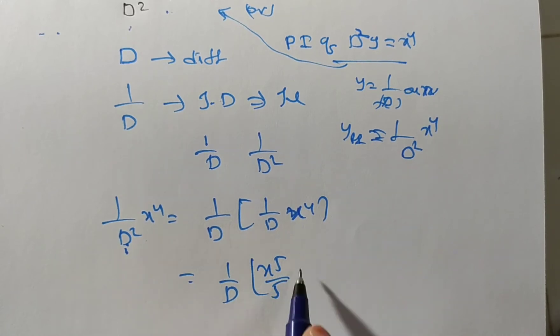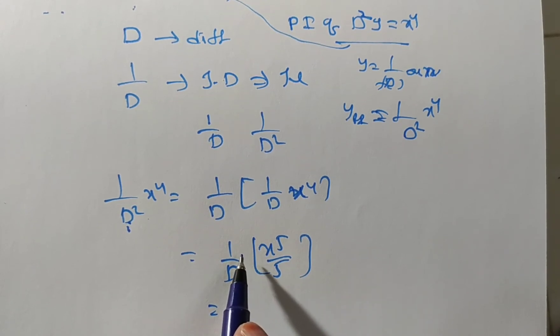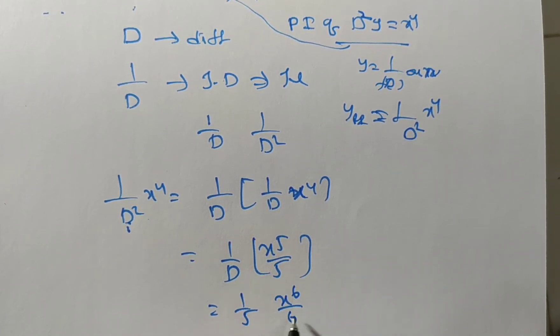Now again you integrate this one because outside 1 by D is there. If you apply the operator 1 by D on x power 5 by 5, one-fifth is outside, x power 5 integration is x to the power of 6 by 6. Hence you will get the answer x power 6 by 30.